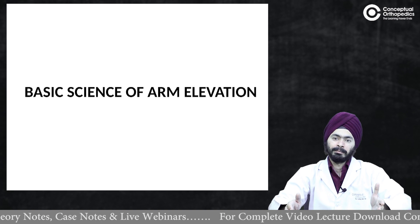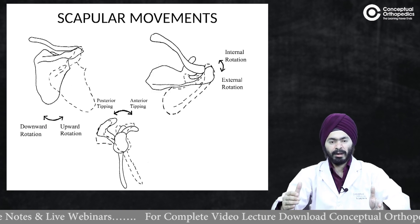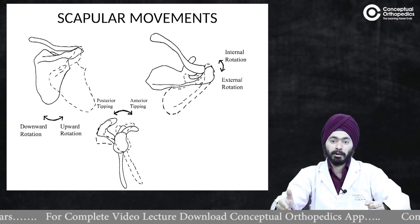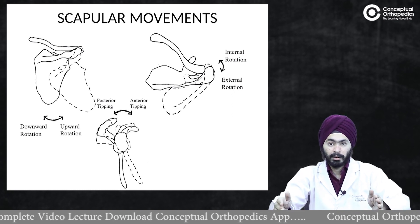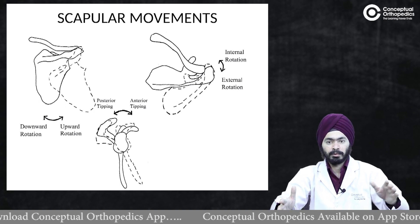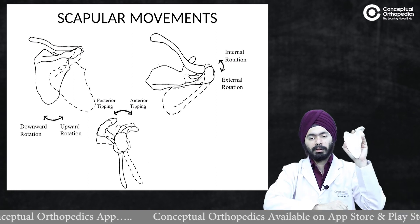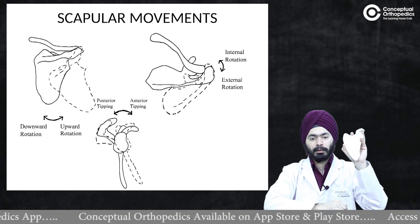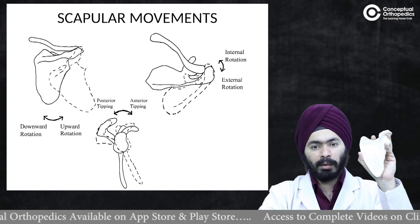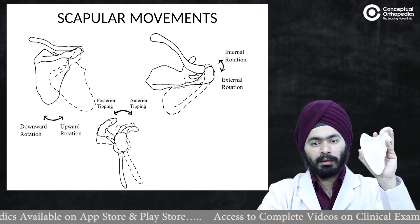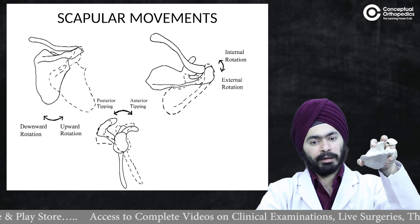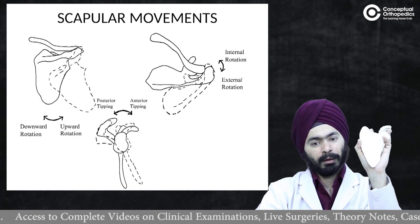Coming to the science — the biomechanics of arm elevation — we have talked about it in other lectures, especially on impingement syndrome, but we'll reiterate it here. Looking at the scapula, this is my left scapula. The three basic planes of scapular movement are: anterior tilt and posterior tilt — so the scapula can go anteriorly or posteriorly.